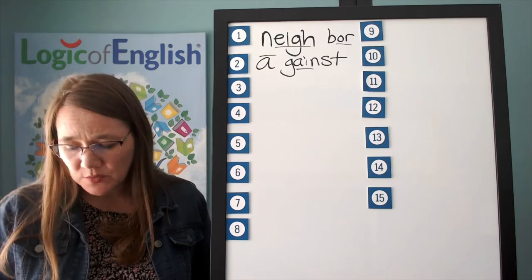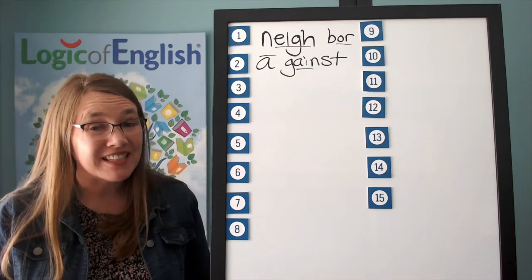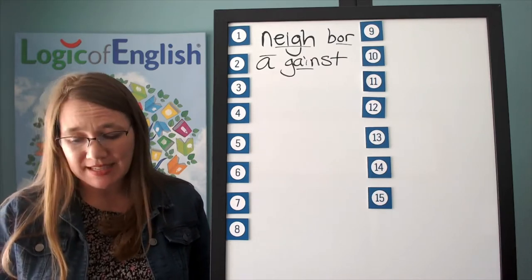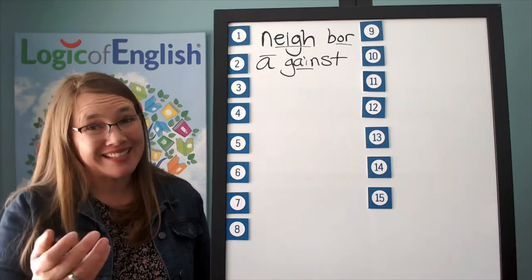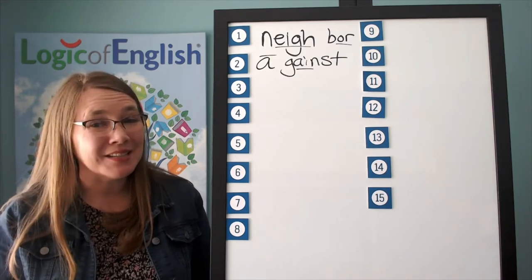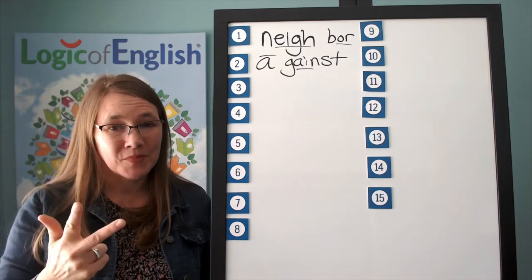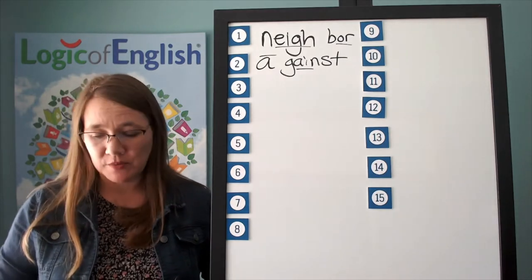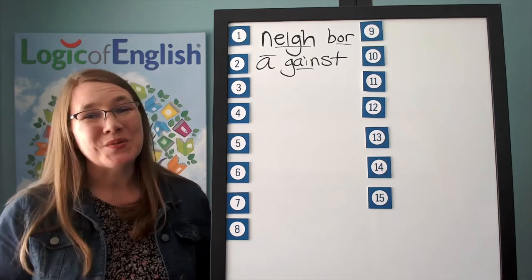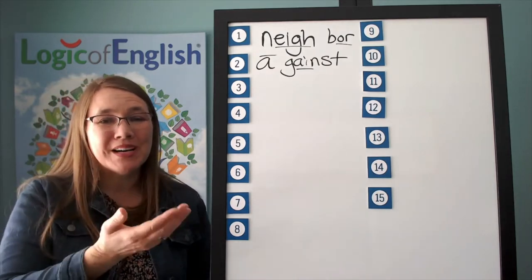The next word is enormous. The elephant is enormous. Enormous. How many syllables? Three. We will say to spell E-Normous. What will we say to spell? E-Normous.